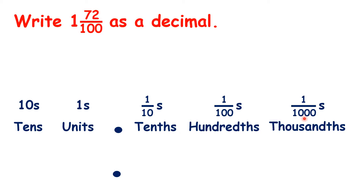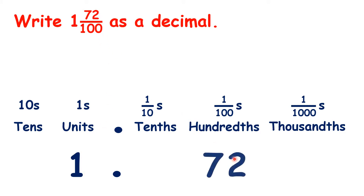If we have a mixed number where the fraction has a denominator of ten, one hundred, or one thousand, we can change that mixed number into a decimal number. So we have one whole, so that's one in the units, then we have 72 hundredths.